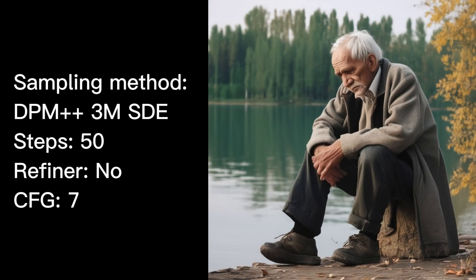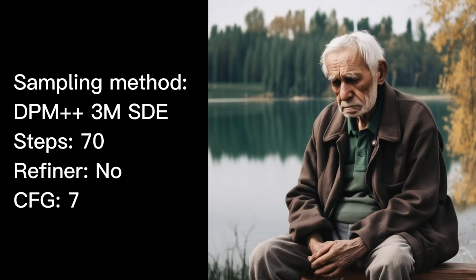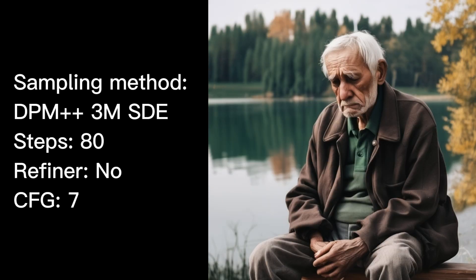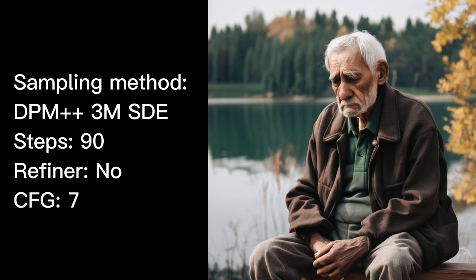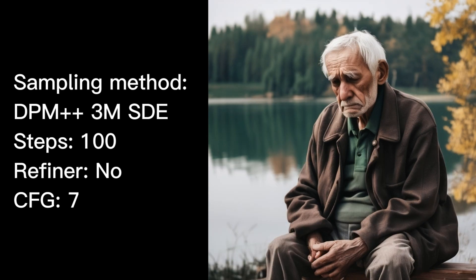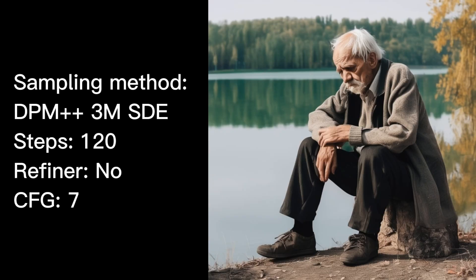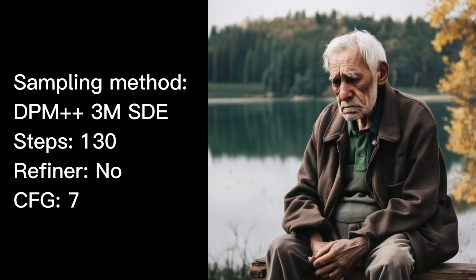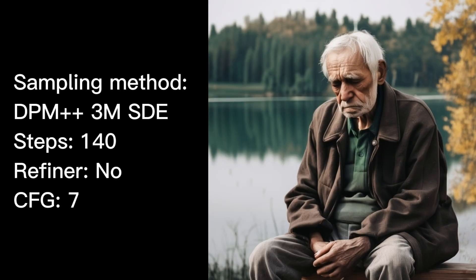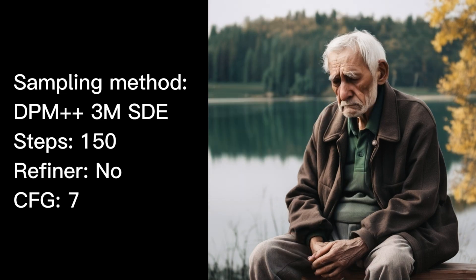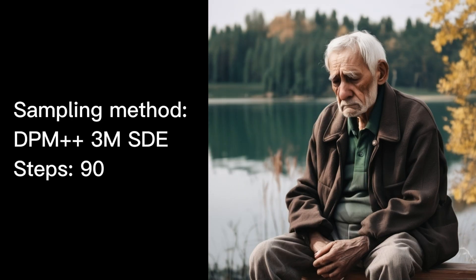Next, I tested various step counts ranging from 10 to 150. We can observe that SDXL is primarily designed for high quality images with a large number of steps — this is evident by the fact that up to 70 steps there's extreme variability in the image, and only after 70 does it become relatively stable. As a final choice, I settled on 90 steps, which is a golden mean between speed and quality.